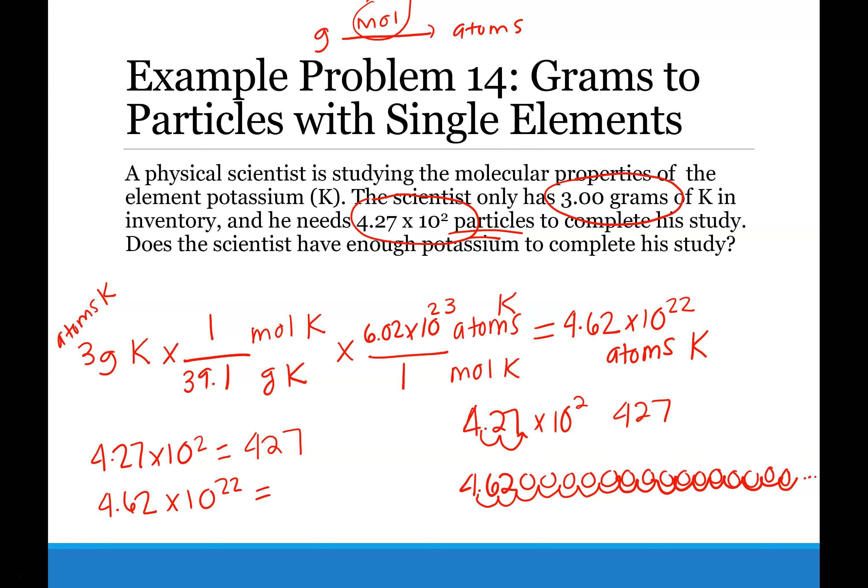So I would say that the scientist has plenty of potassium in inventory to complete his study, because that is a lot of atoms of potassium, and he only needs 427. So the answer is yes, the scientist does have enough in inventory to continue the study.